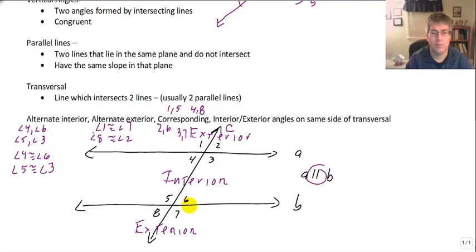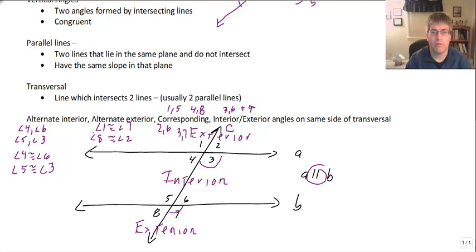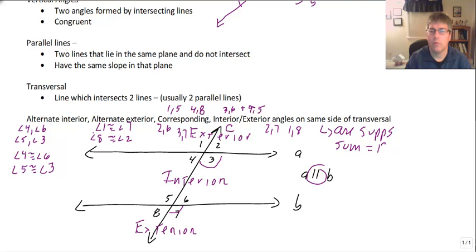And the corresponding angles are congruent — for example, angle 3 is congruent to angle 7. We also have interior angles on the same side of the transversal, which would be in the interior region on the same side: angles 3 and 6, and 4 and 5. Exterior angles on the same side of the transversal would be angles 1 and 8, and 3 and 7. When lines are parallel, these are supplements — their sum equals 180 degrees.